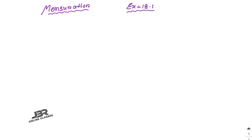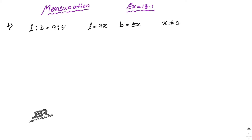Exercise 18.1, the first problem: the length and breadth of a rectangular field are in the ratio 9:5. So that means L to B equals 9 to 5, so length equals 9x and breadth equals 5x, where x is a non-zero constant.